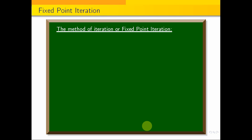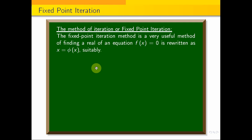Hi students, in this class I am going to explain the fixed point iteration method. The fixed point iteration method is a very useful method of finding a real root of an equation f of x is equal to 0.